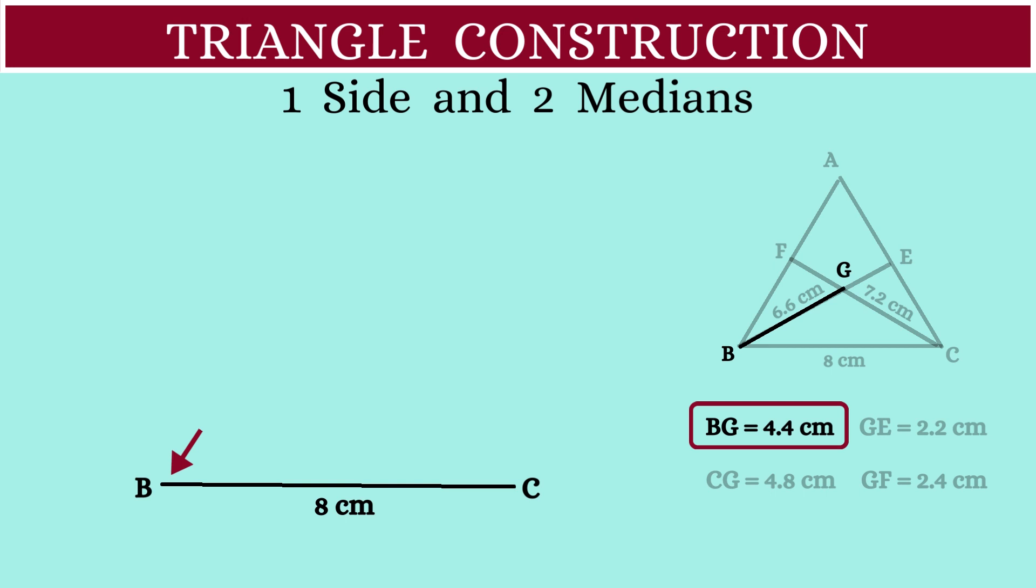Next, with C as the center and the radius as 4.8 centimeters, draw another arc to cut the previous arc at point G.